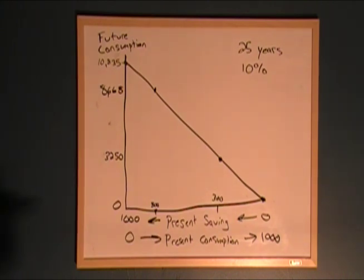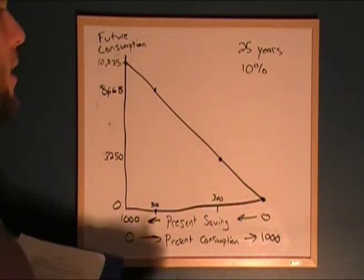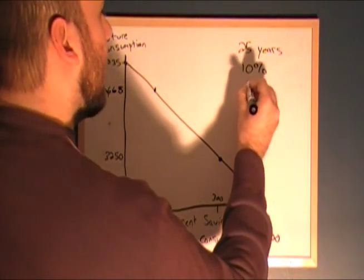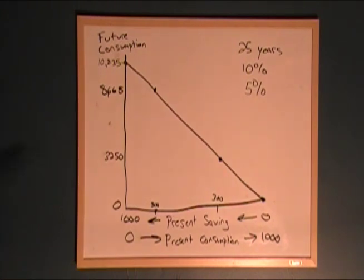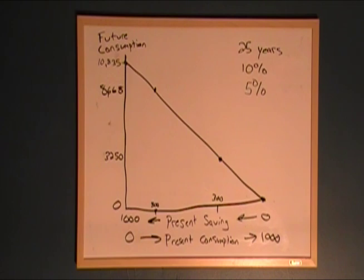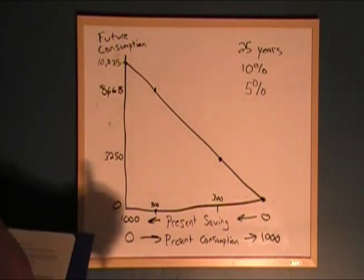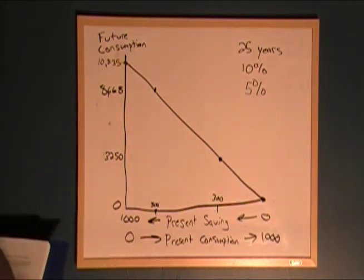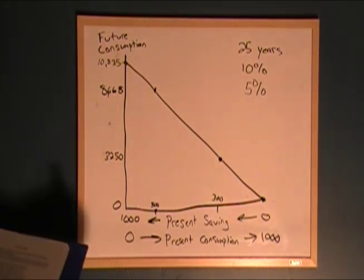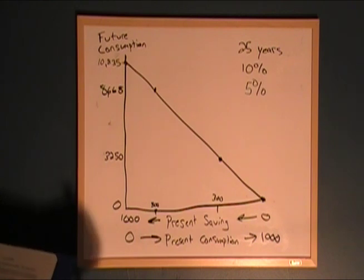So what happens if our interest rate changes? Let's say something goes down in the market and now we can only guarantee ourselves a 5% interest rate over the next 25 years. How is that going to affect our budget constraint? If you said it would rotate in, you are correct. At 5%, if we save $1,000 currently, after 25 years we'll have $3,386.